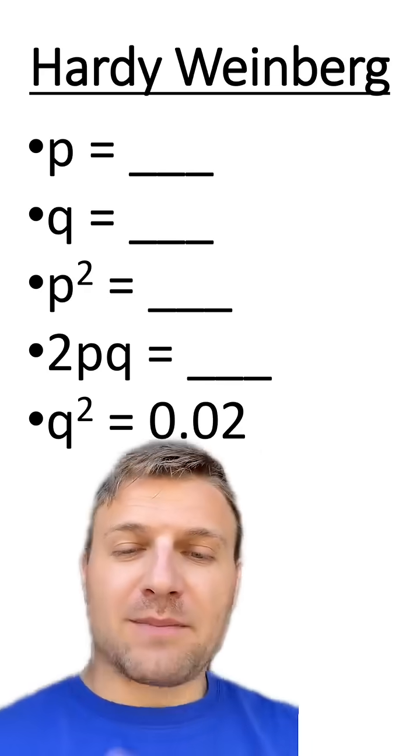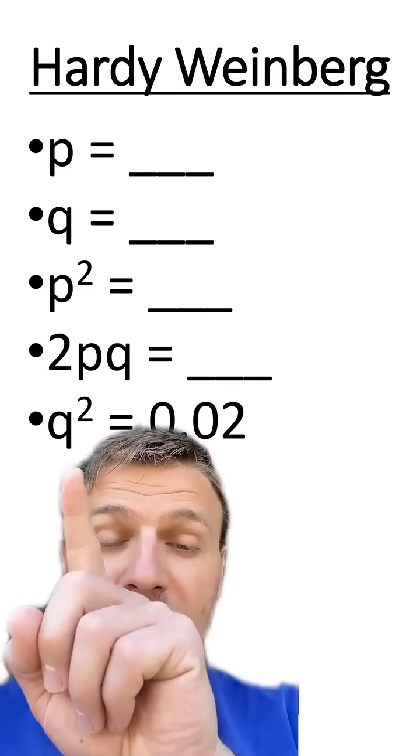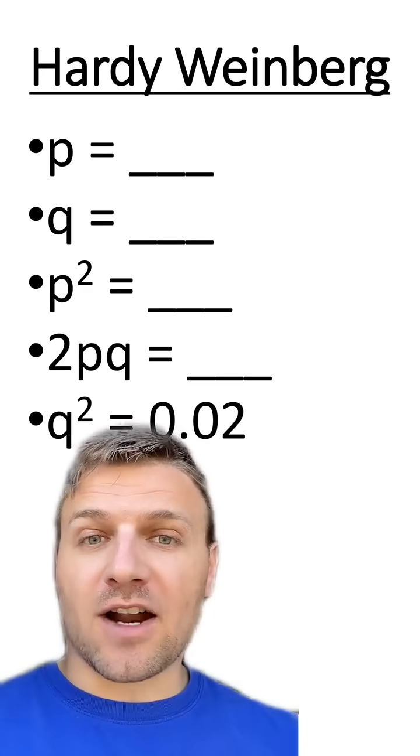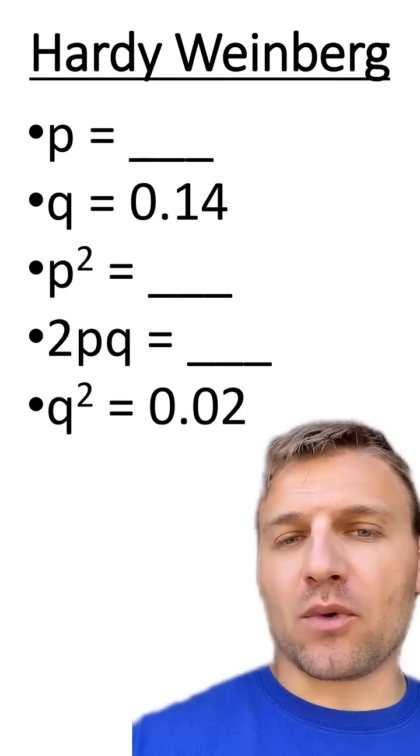Because if q squared equals 0.02, we can take the square root of this and the square root of this to figure out what q is. And if we do the math, q is going to equal 0.14.